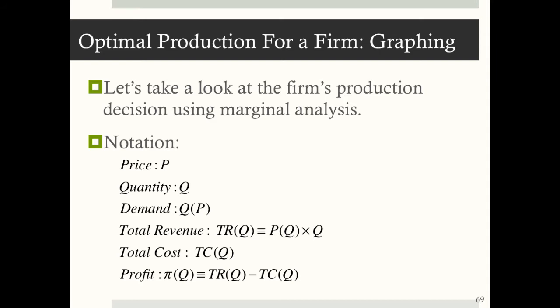Let's take a look at the firm's production decision using marginal analysis with some general functions. We'll use the following notation: P is price, Q is quantity, demand is Q(P), total revenue is defined as price times quantity, total cost is TC(Q), and profit is the difference between total revenue and total cost.